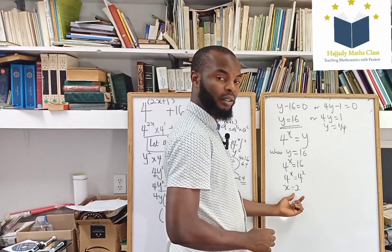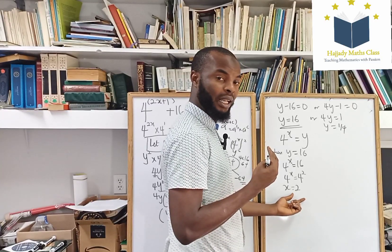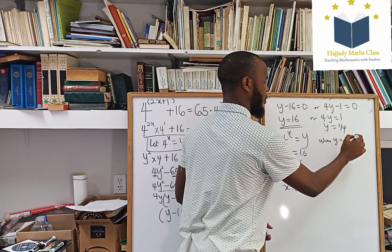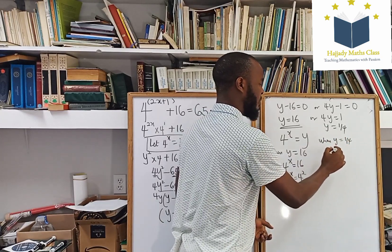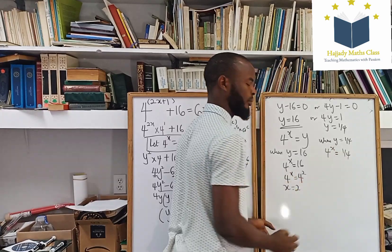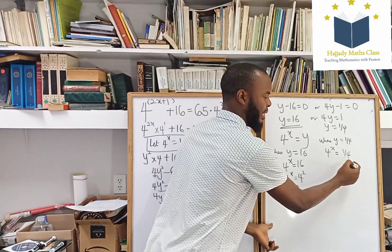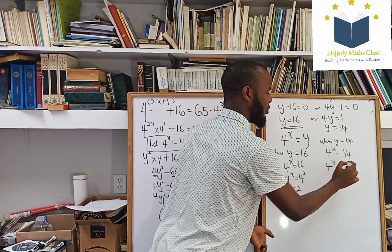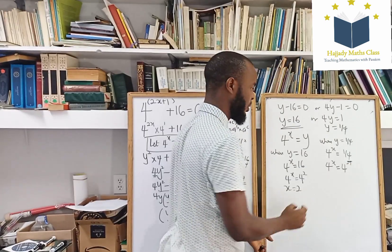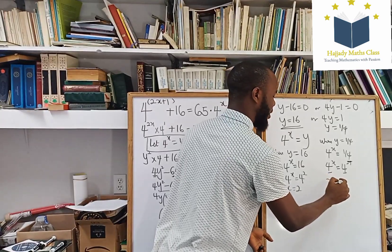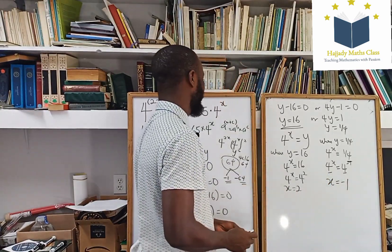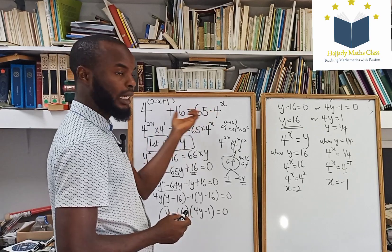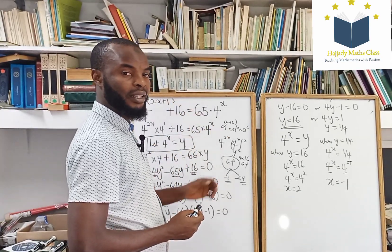That's the first value for x. In a quadratic equation, you need to get two values for x. Alternatively, when y equals 1 over 4, we have 4 to the power of x equals 1 over 4. Writing this in index form, 4 to the power of x equals 4 to the power of negative 1. Since the bases are equal, x equals negative 1. You can plug in these two values into the original equation and verify that both sides are equal.